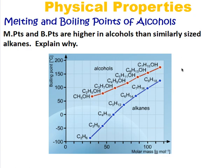To answer this question you need to think about the polarity of the molecules. Alkanes are non-polar. Alcohols have that OH group, and the OH bond is a polar covalent bond, which creates a dipole within the alcohol. That causes alcohols to have stronger intermolecular forces than alkanes. Therefore it takes more energy to separate the alcohol molecules than similar sized alkanes. When explaining this, you need to talk about polarity: alkanes are non-polar, alcohols are polar.